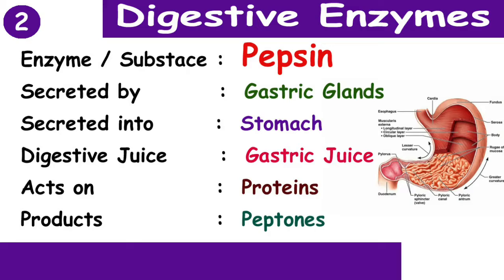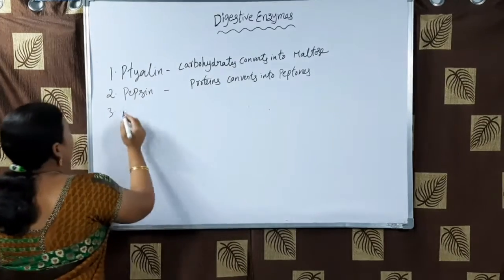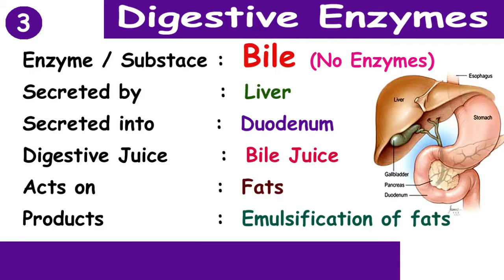The second enzyme is pepsin. Pepsin is secreted by gastric glands, secreted into the stomach, and the digestive juice is gastric juice. It acts on proteins and finally converts the proteins into peptones.